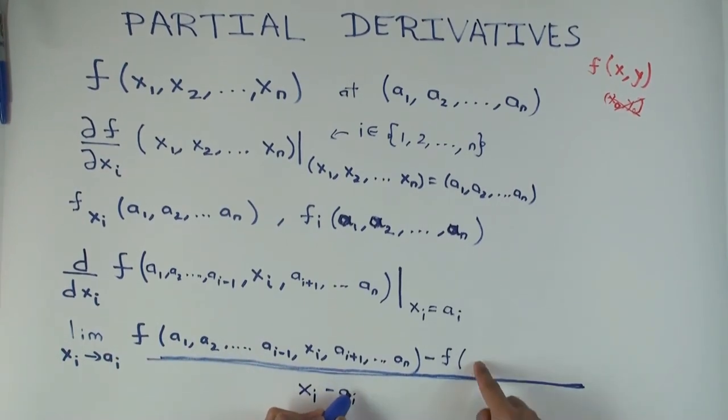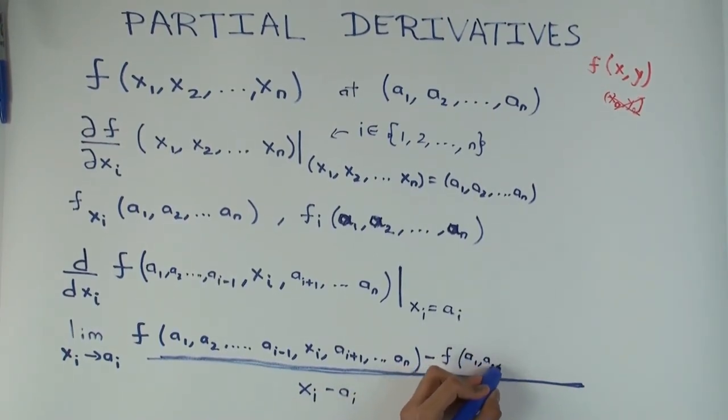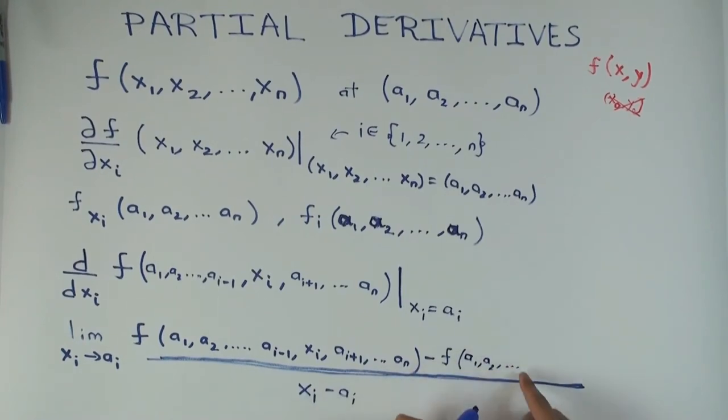But I need to figure out what this is. This is just f at the actual point. So here you will put, here you basically just use ai. So you don't actually put xi, you put ai.